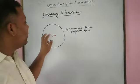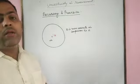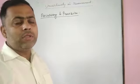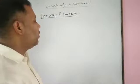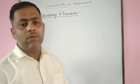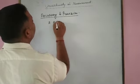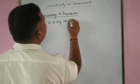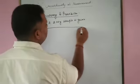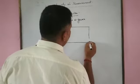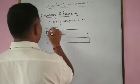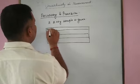The data obtained in case of B is more accurate, but the data of A is more precise. This is how we can understand what accuracy and precision mean. Let us understand this further by taking the next example: a 2-gram sample is given to three students and they are asked to weigh it.